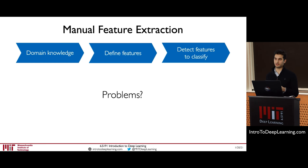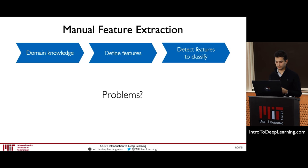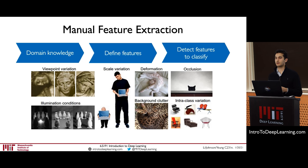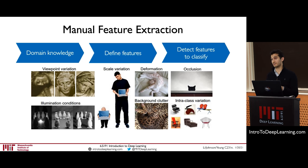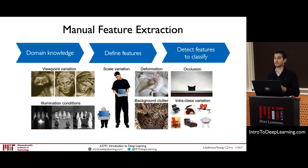One way to solve this is to leverage domain knowledge — for human faces, we could manually define what we believe those features are and use detection results for classification. But there's a huge problem: images are 3D arrays of brightness values and can have enormous variation, including occlusions, changes in illumination, and intra-class variation. Our pipeline needs to be invariant to all of these variations while still being sensitive to inter-class differences that distinguish one class from another.